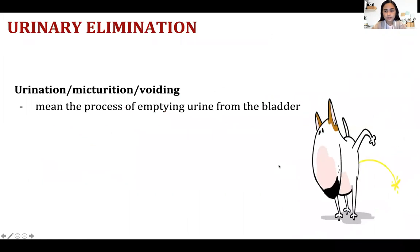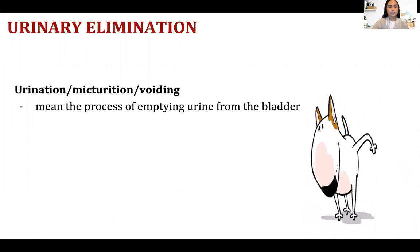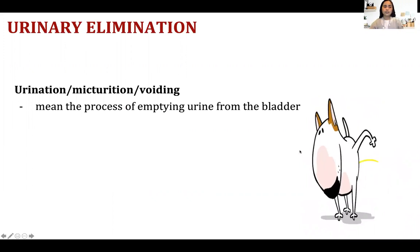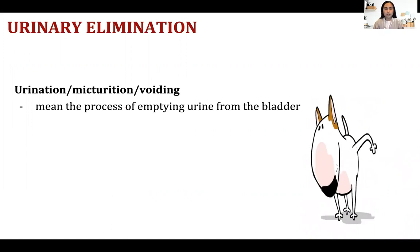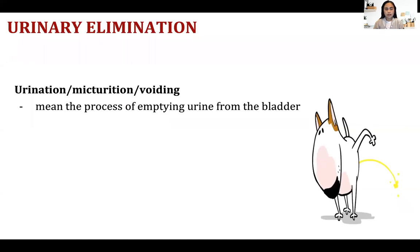We need to define different terms for us to understand this topic fully. Let's start with the definition of urination, maturation, and voiding. These three terms mean the same thing — the process of emptying urine from the bladder.